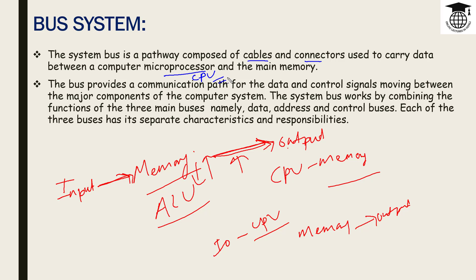The bus provides communication paths for data and control signals moving between major components of the computer system — that is, I/O devices, memory, and CPU. The system bus works by combining the functions of three main buses: the data bus, address bus, and control bus, each with their own responsibility and characteristics.